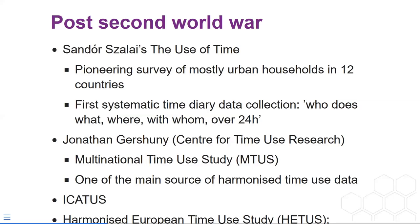The time diary is defined as an instrument which gathers who does what, where, and with whom over 24-hour periods. A second pioneer of time use research is Jonathan Gershuni at the Centre for Time Use Research here in the UK, who set up the Multinational Time Use Study, still one of the main sources of harmonized time use data. Later, international nomenclatures of time diary data were created, such as ICATUS at the United Nations or the Harmonized European Time Use Study via Eurostat.